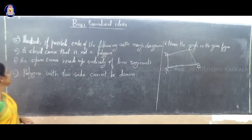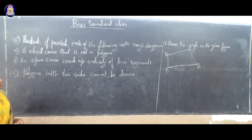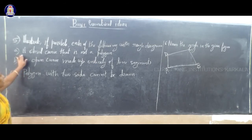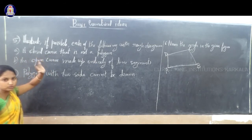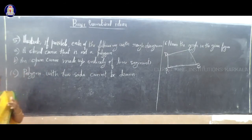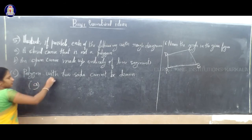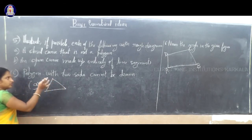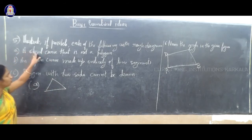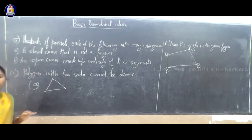Next question: illustrate if possible each of the following with a rough diagram. First question: a closed curve that is not a polygon. A closed figure — what is not a polygon? If I draw a polygon like this, it is a closed figure, but it is a polygon, so it doesn't meet the requirement.